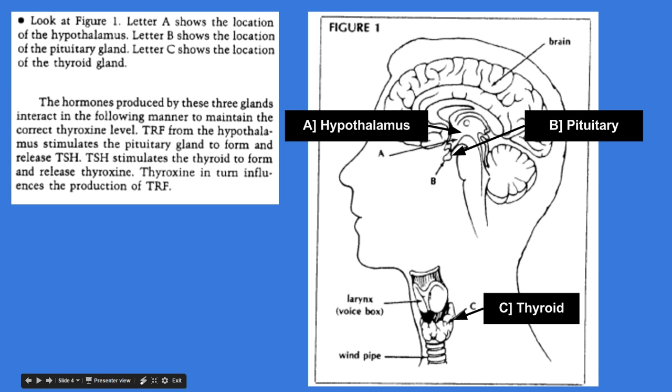If you look at the first part of this, it says look at Figure 1. Letter A shows the location of the hypothalamus, and I've labeled that for you. Letter B shows the location of the pituitary gland, and again, that's labeled for you as well. And letter C shows the location of the thyroid, which is in our neck, right? Inferior to the larynx and anterior to the larynx as well, or the trachea.